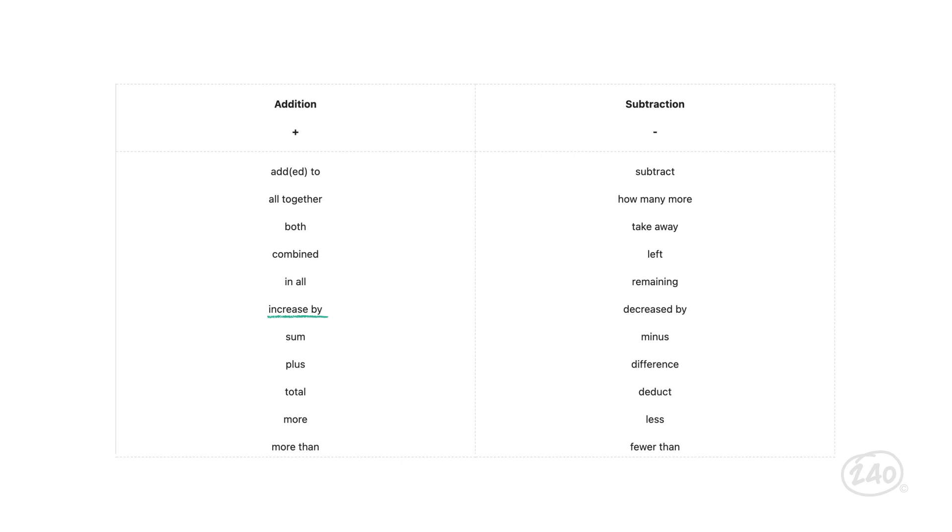Basically, you'll want to be able to read a word problem and match up all of the important information, either with a number, variable, or operation. Here's a snippet of one of the tables included in our study material that's a useful translation guide. So if you see the words increase by in a word problem, it's probably talking about addition. If you see deduct, you'll probably use subtraction in your expression. When we pick variables for our expressions, we usually just use the first letter of the real-world meaning. For example, four dogs could be represented by 4d.